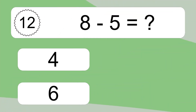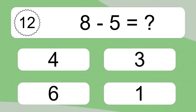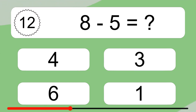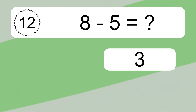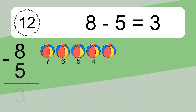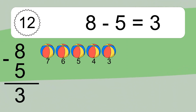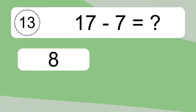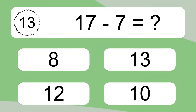8 minus 5 equals what? 8 minus 5 equals 3. Let's count it: 7, 6, 5, 4, 3.